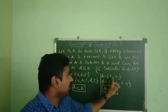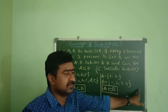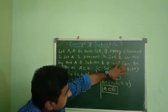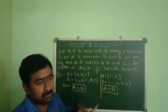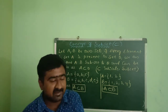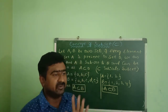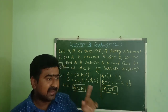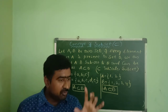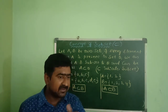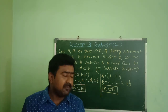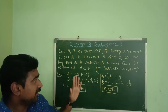You can also write with numbers. If A is equal to {1, 2, 3} and set B is {1, 2, 3, 4}, then A is a subset of B. In the next session we will discuss problems. If A is a subset of B, then what is the value of A union B, A intersection B, and A minus B.